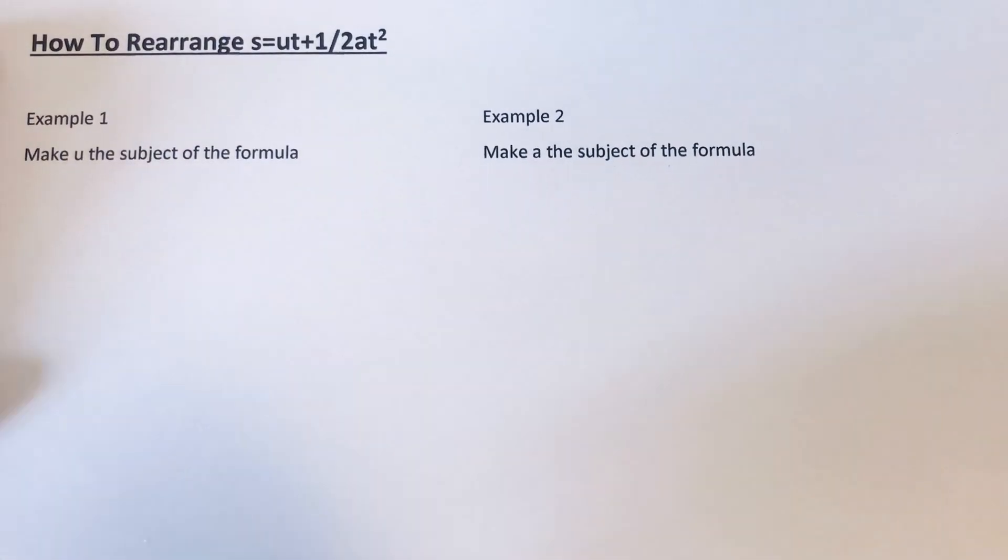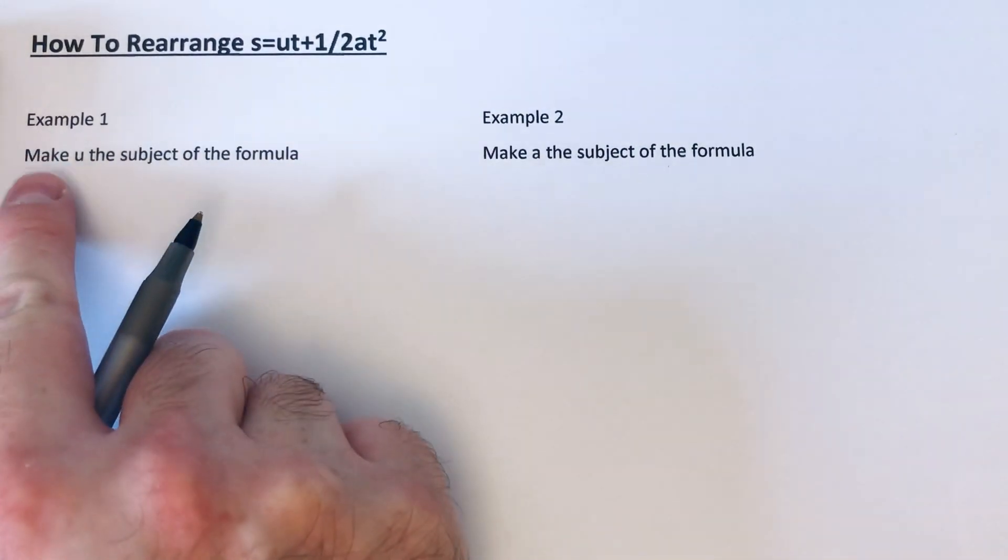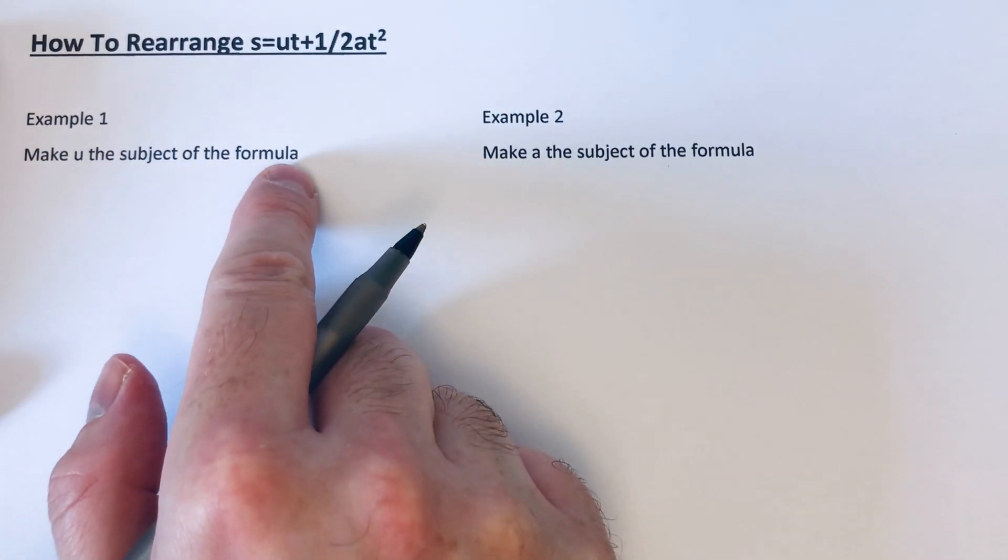Hi guys, welcome back. This is Maths 3000. Today I'm going to show you how to rearrange the formula s equals ut plus a half at squared. So the first example, we need to make u the subject of the formula.